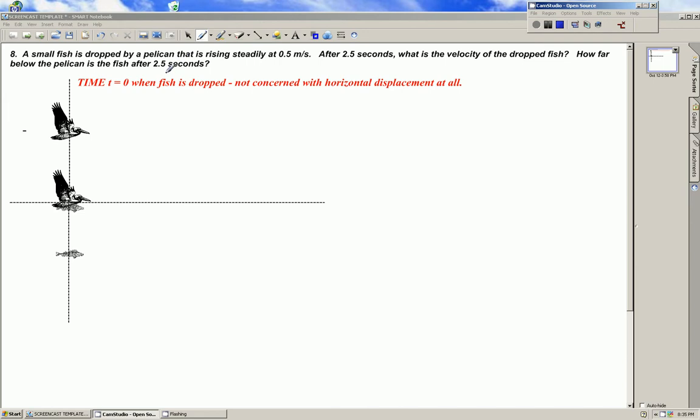This is the one involving the fish that's dropped by a pelican that's rising steadily at 0.5 meters per second. So the pelican and the fish at time t equals zero has a velocity of 0.5 meters per second in a positive direction. Let's put down everything we know at time t equals zero.